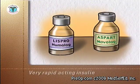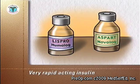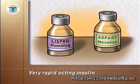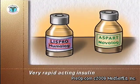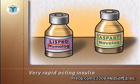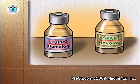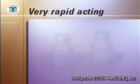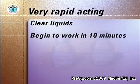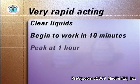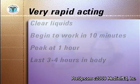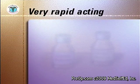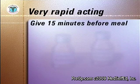A very rapid acting form of insulin called Lispro insulin is marketed under the trade name Humalog. A second form of very rapid acting insulin is called Aspart and is marketed under the trade name Novolog. Humalog and Novolog are clear liquids. They begin to work 10 minutes after injection, peak at one hour after injection, and last three to four hours in the body. Humalog and Novolog are used as bolus insulins to be given 15 minutes before a meal.